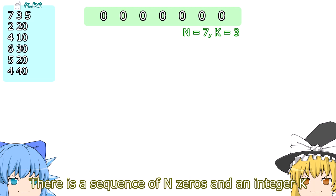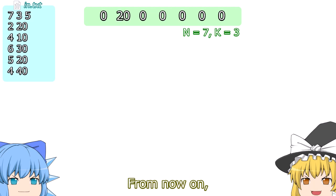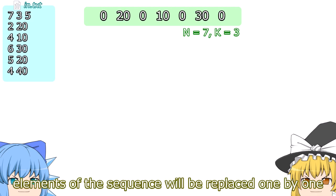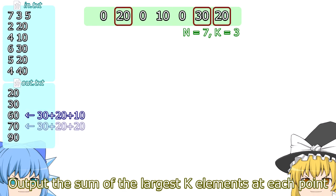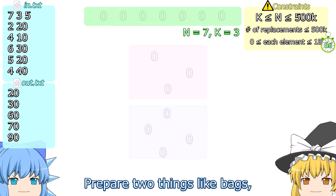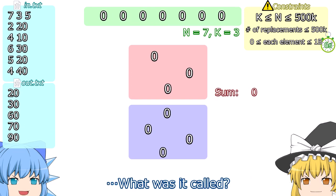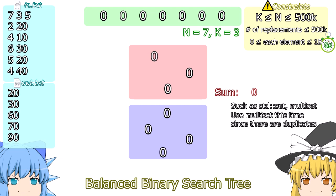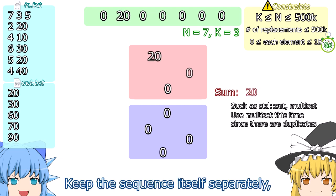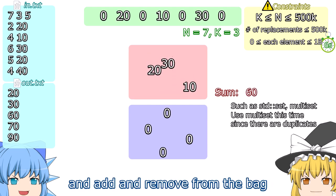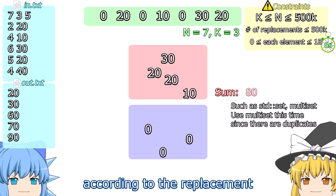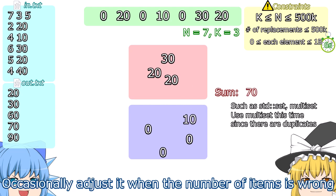Problem E: there is a sequence of N zeros and an integer K. Elements of the sequence will be replaced one by one; output the sum of the largest K elements at each point. Prepare two bags — putting higher and lower elements in them — using a balanced binary search tree. Keep the sequence itself separately, and add and remove from the bags according to each replacement, occasionally adjusting when the number of items is off.